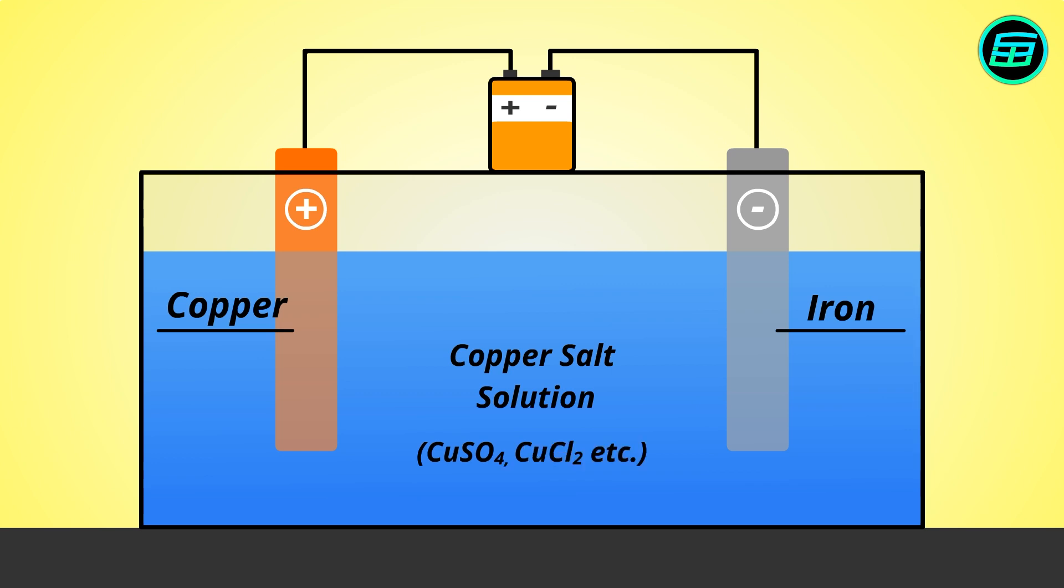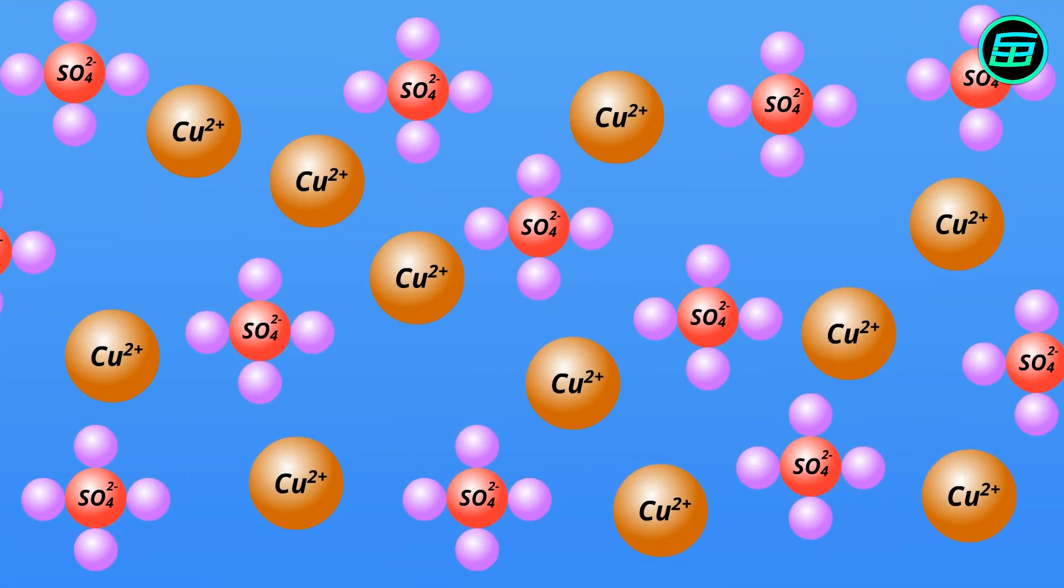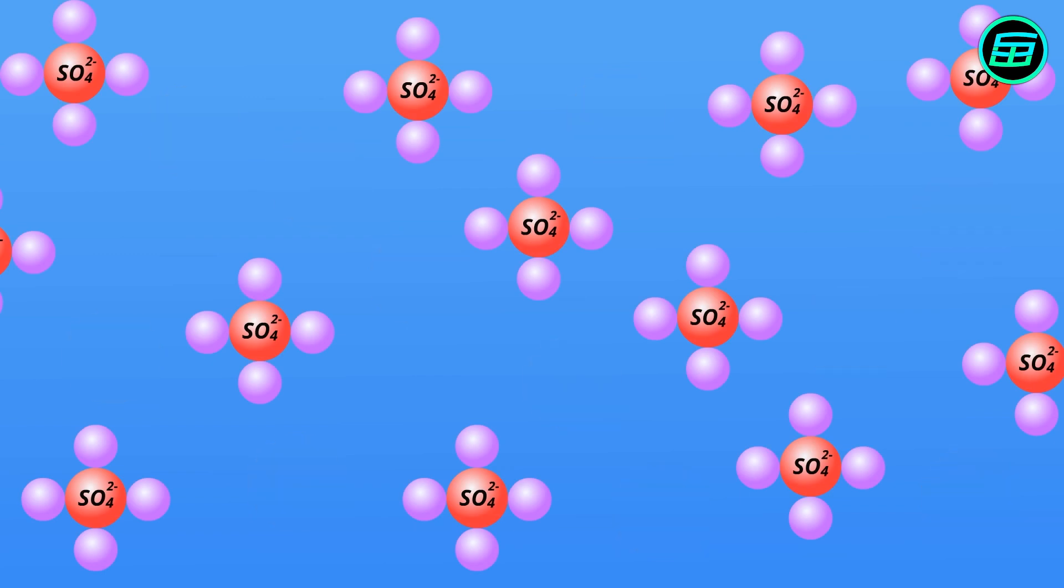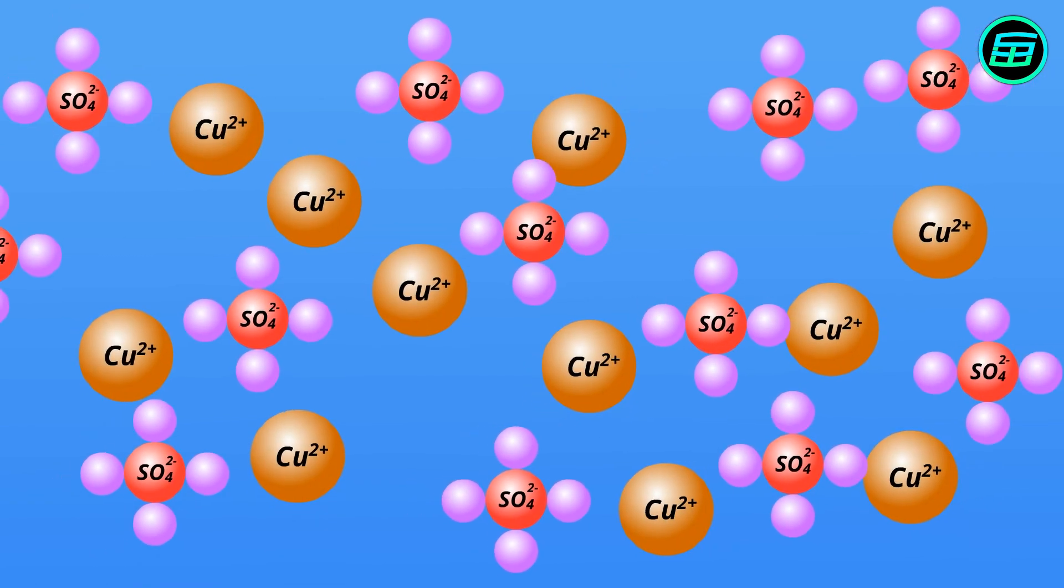Let's say we choose copper sulfate. There are positively and negatively charged ions called cations and anions in the electrolytic solution and they are able to move freely.